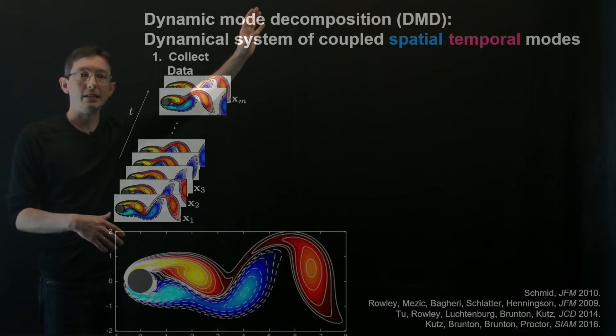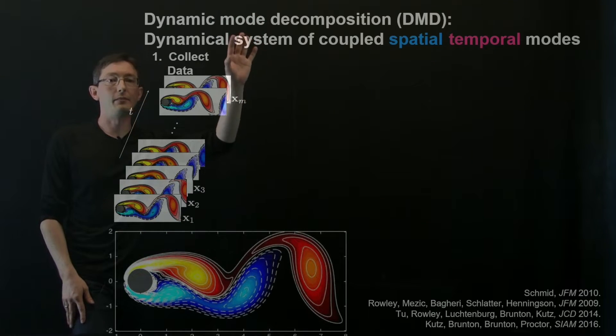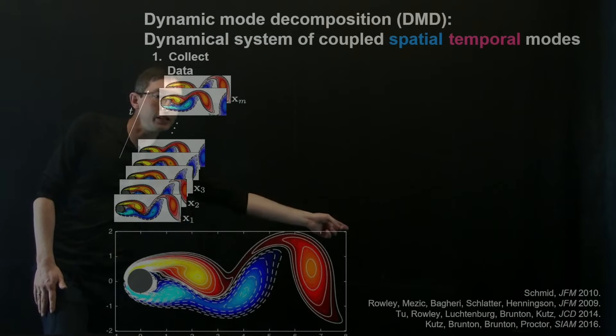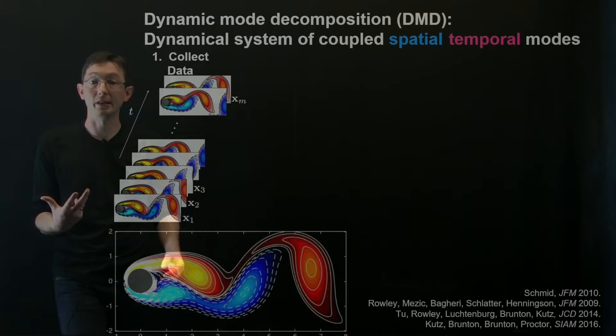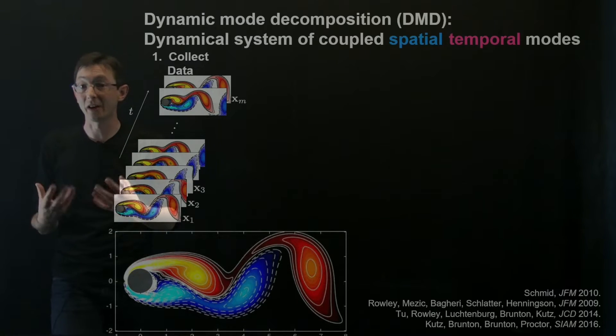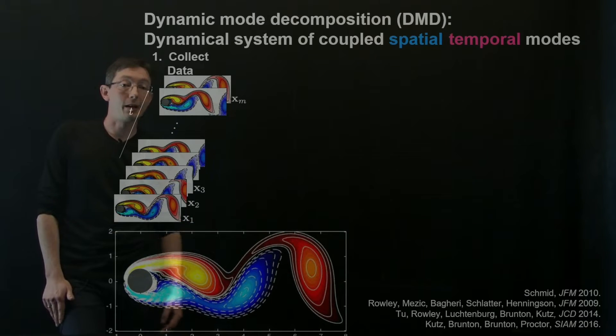I'm going to walk you through the overview of DMD, and then in later videos we're going to see how to actually code it up and apply it to various systems, and we're also going to look at modern innovations and extensions to the theory. So Dynamic Mode Decomposition, DMD, essentially gives you a coupled system of spatial-temporal modes. This was originally introduced in the fluid dynamics community by Peter Schmidt, and it was later connected to this nonlinear dynamical systems theory called Koopman theory by Clancy Rowley, Igor Mezich, and their collaborators.